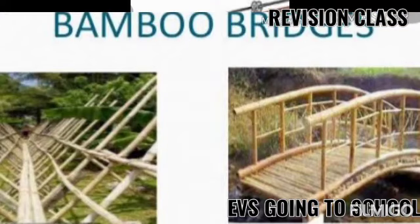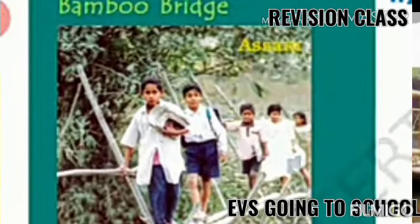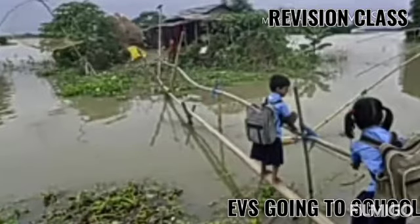First, in Assam, you see that bamboo bridge. Assam is a place where there is very high rainfall. Sometimes the rain causes knee-high water everywhere. But the students do not stop going to school. What they do is they hold their books in one hand and bamboo with the other, and quickly cross the bamboo and rope bridge to reach school.